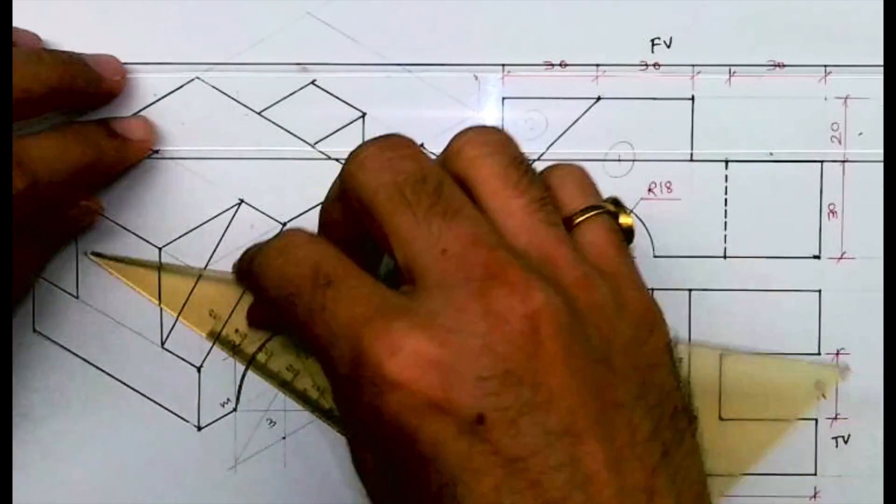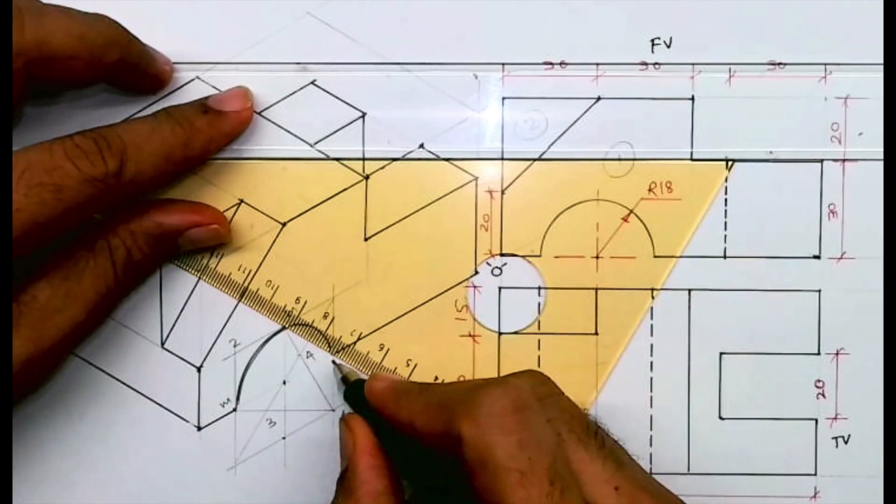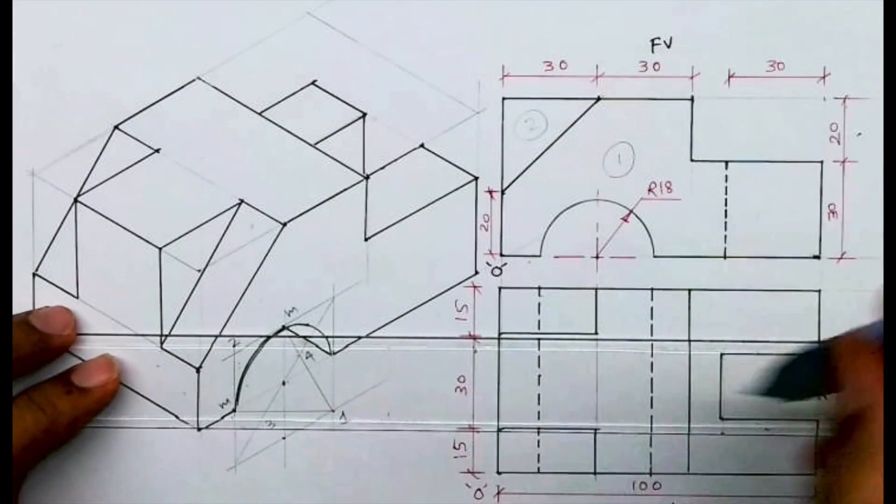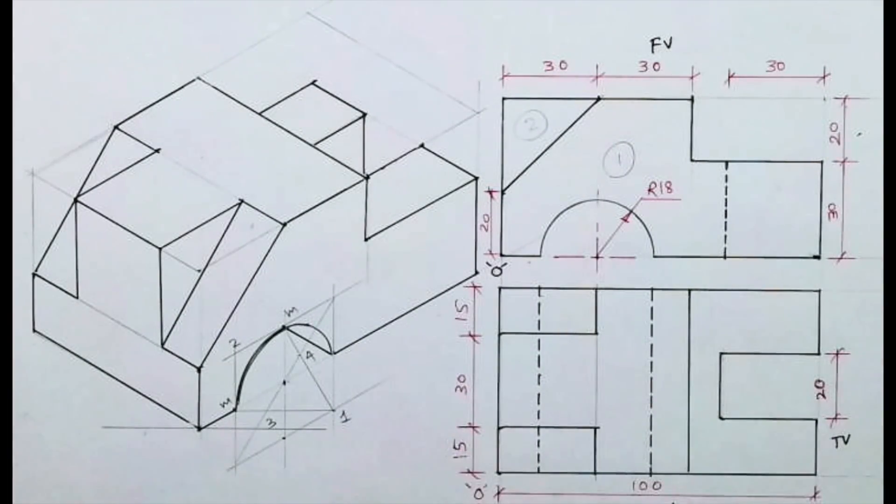And then we need to show depth. So from here, one line will go inside. So I hope everyone understood the sum. Thank you.